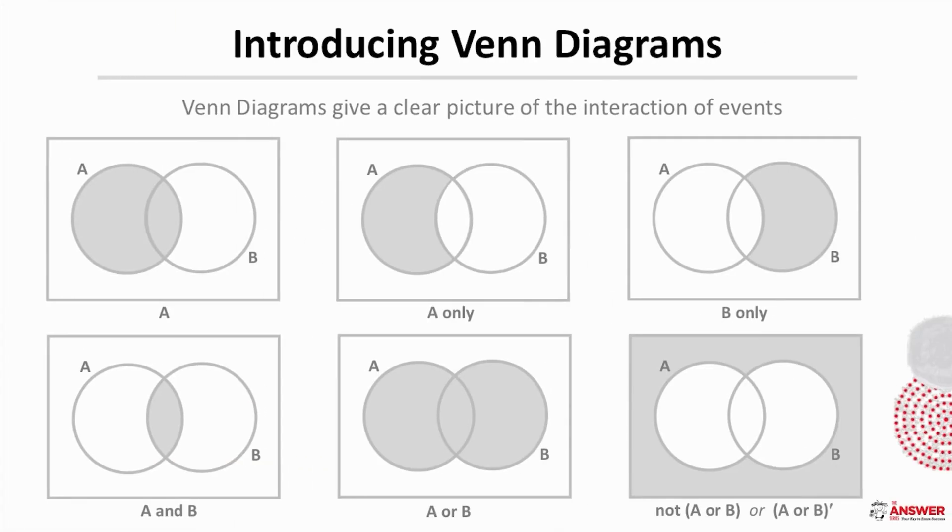These here are examples of Venn diagrams and they're a great way to give a clear picture of the interaction of events. These are all examples of two events within a sample space with shadings indicating different ways of selecting parts of the whole.